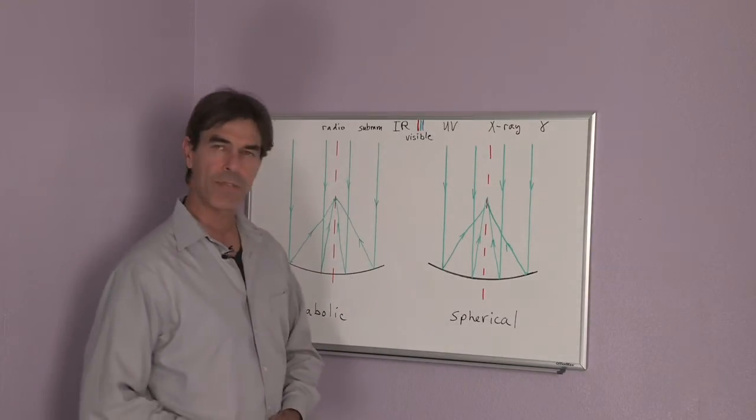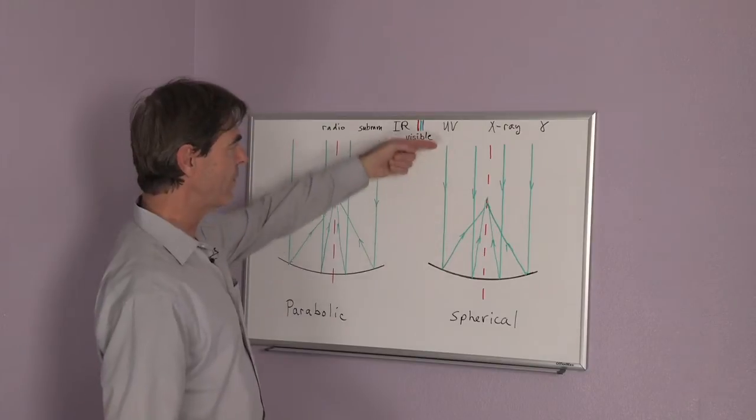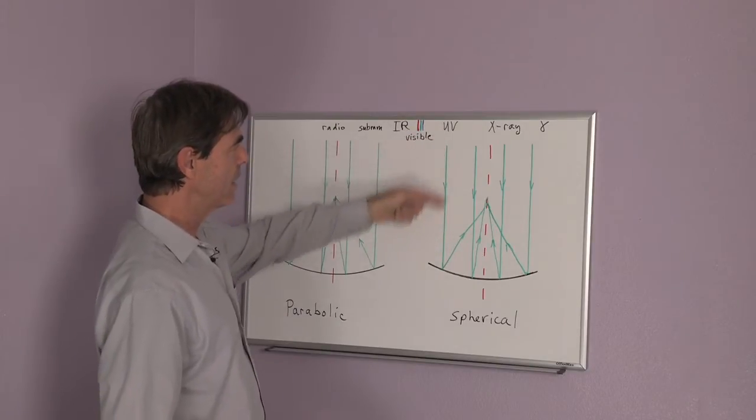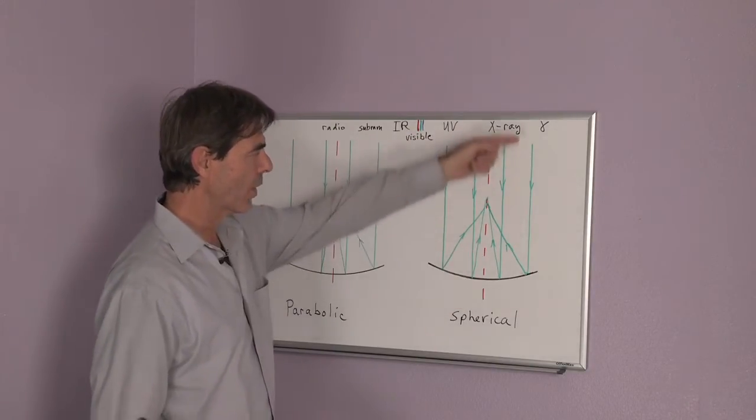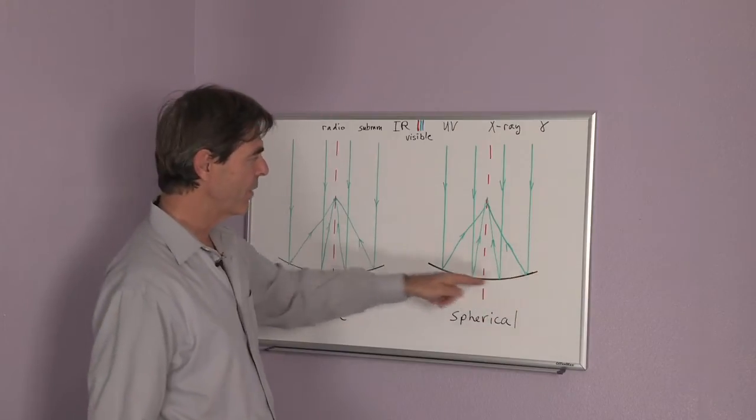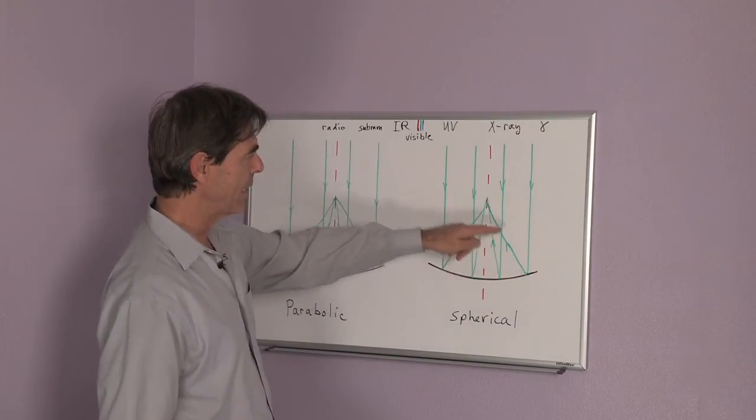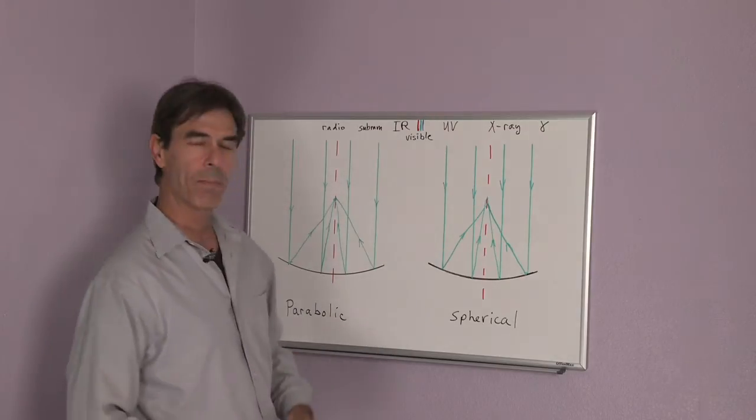How these mirrors focus light are shown in these examples. If you have light coming from a distant star, it bounces off this shiny mirror surface and is focused more or less into a point.